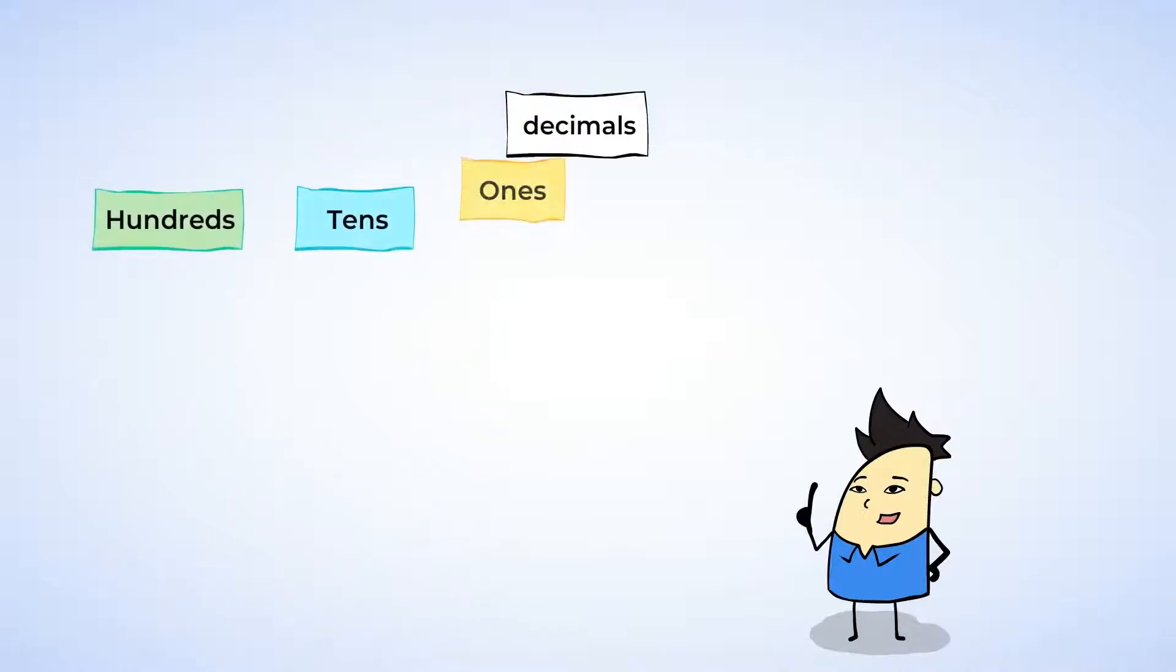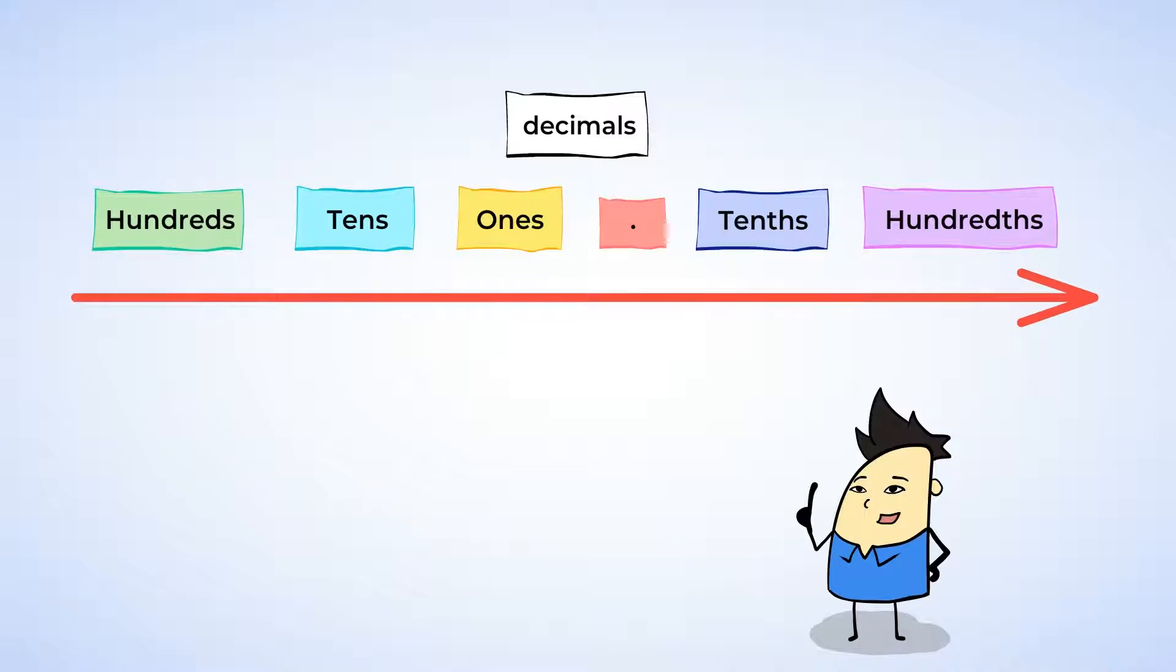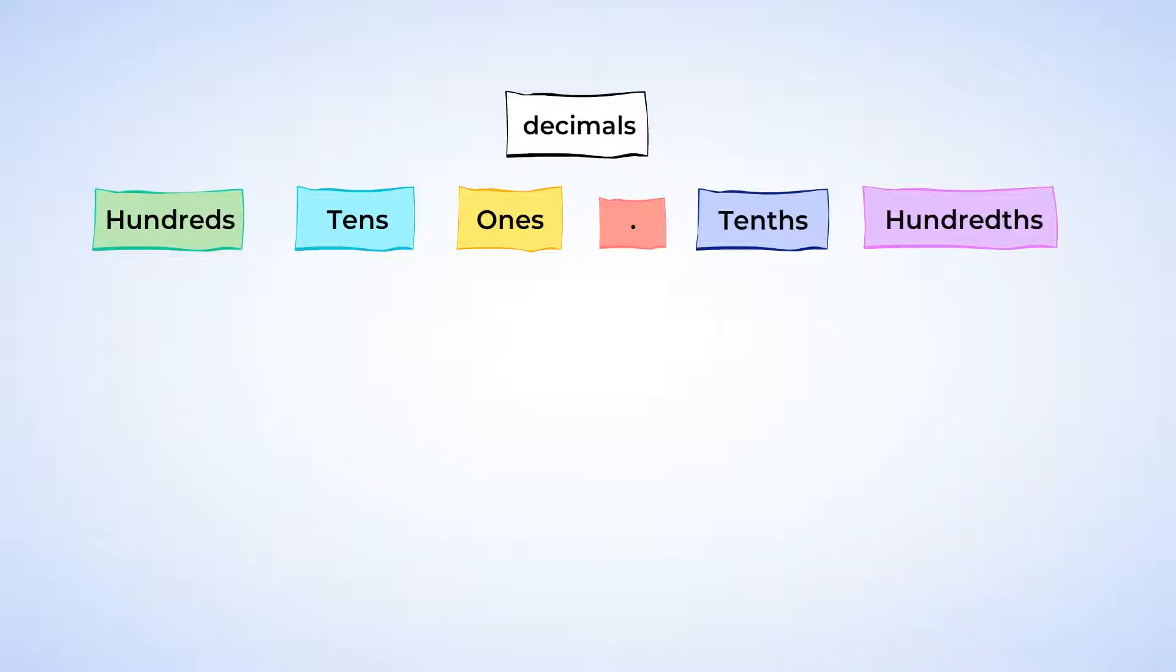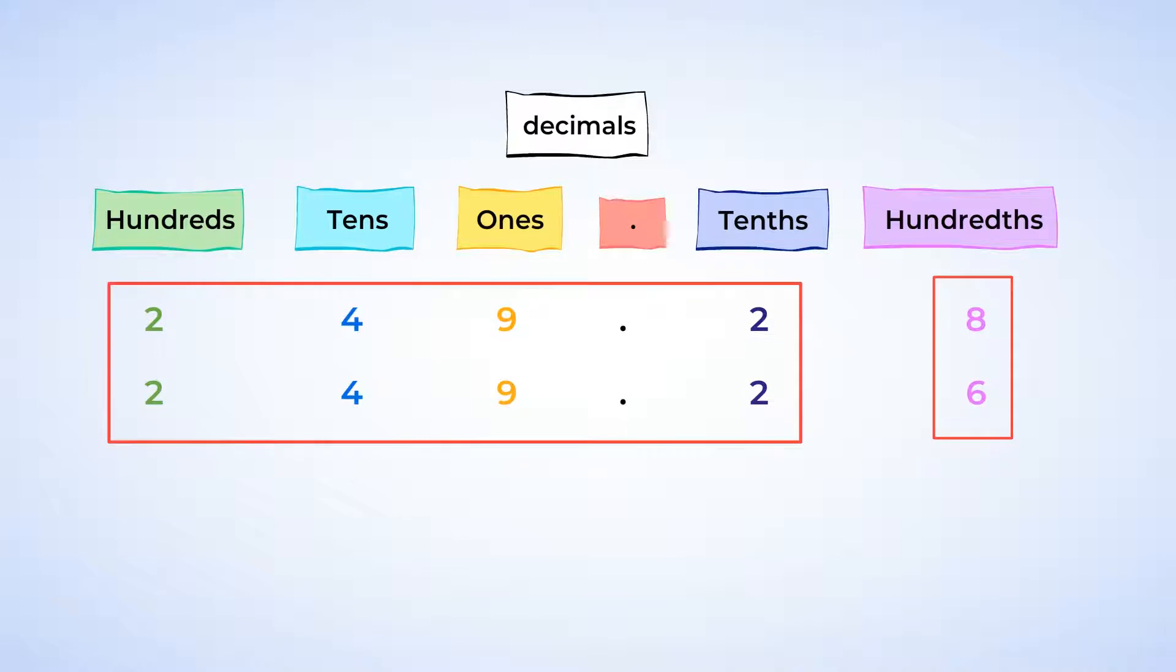When comparing two whole numbers, you start with the highest place value, and if the numbers are the same, you move on over to the smaller place value. When comparing 249 and 28 hundredths to 249 and 26 hundredths, we have to go all the way over to the hundredths place before we can determine which number is larger, since all the other place values have the same number. 249 and 28 hundredths is larger by two hundredths.